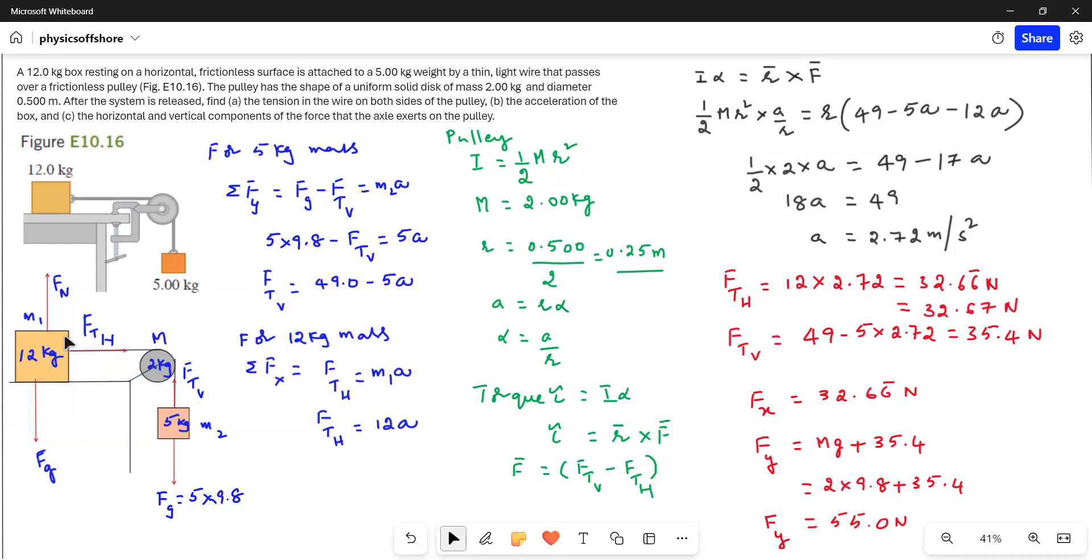Now for the 12 kg mass, Fg and Fn balance each other, and then Fth is responsible for the acceleration. Therefore, sigma Fx equals Fth equals m1a, or Fth equals 12a.